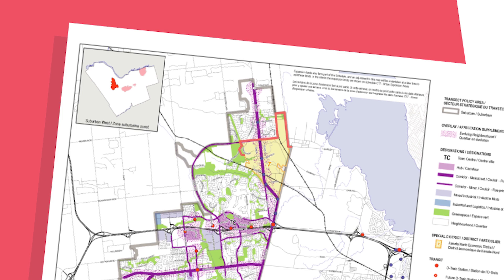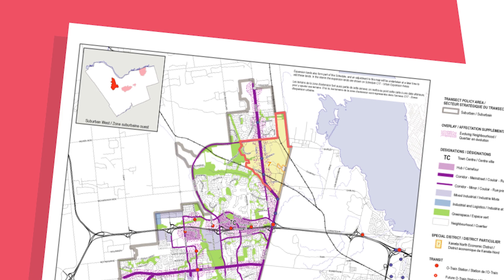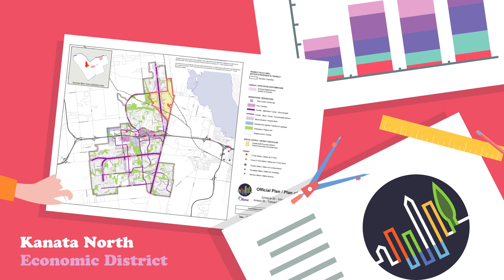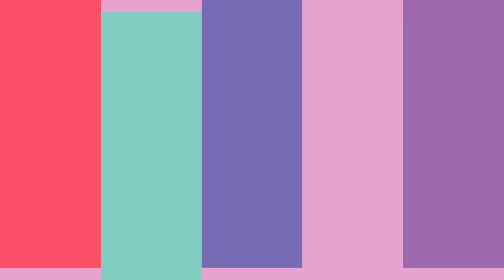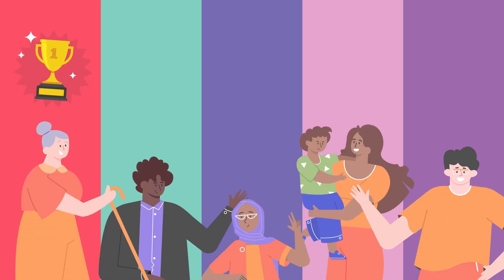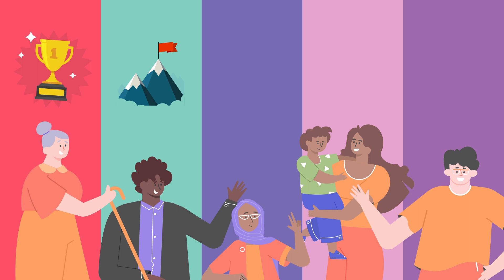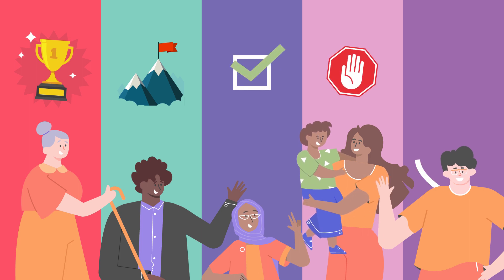The CPP system is a planning approach being tested in Ottawa that recognizes the uniqueness of a specific area, is created with meaningful community and stakeholder involvement, and combines goals, objectives, criteria and conditions for development, regulations and guidelines into a CPP by-law.